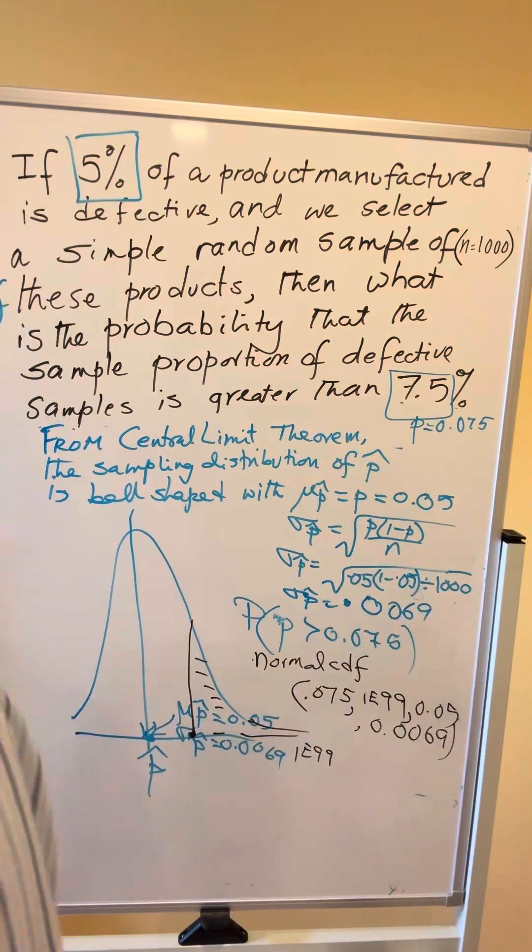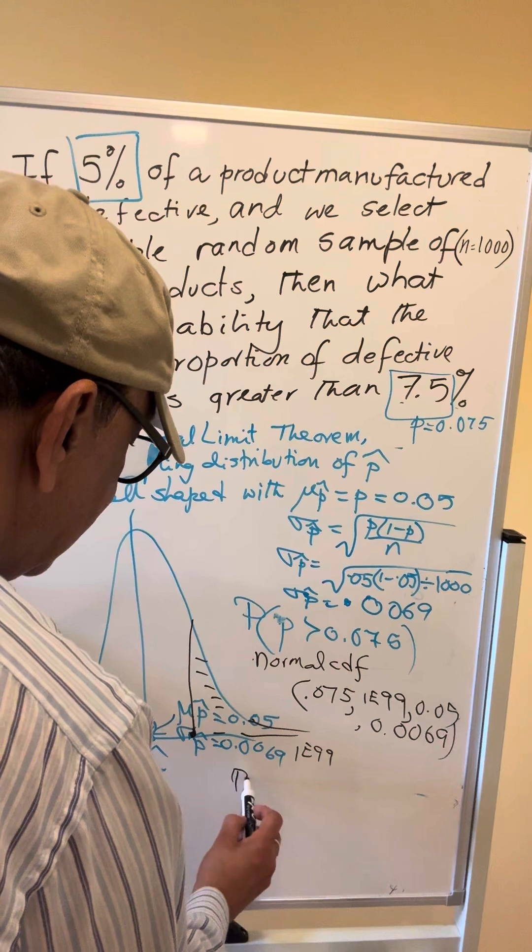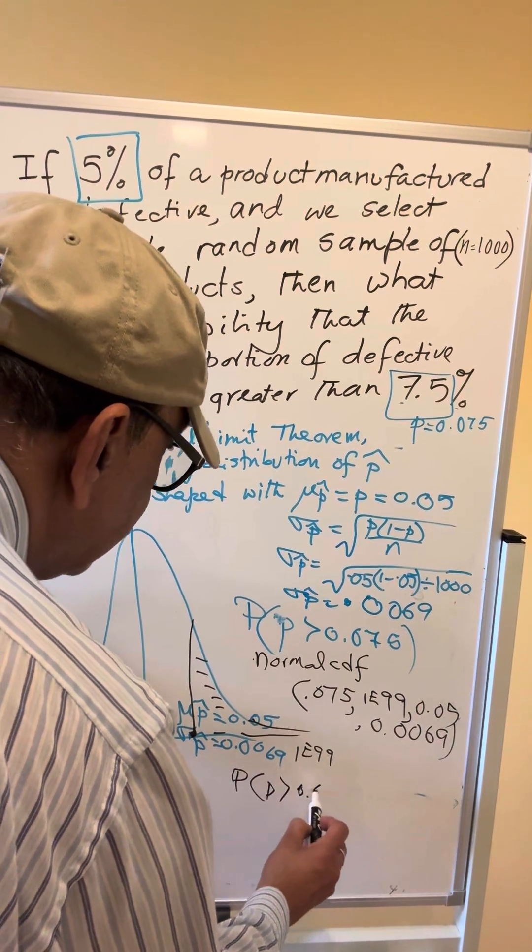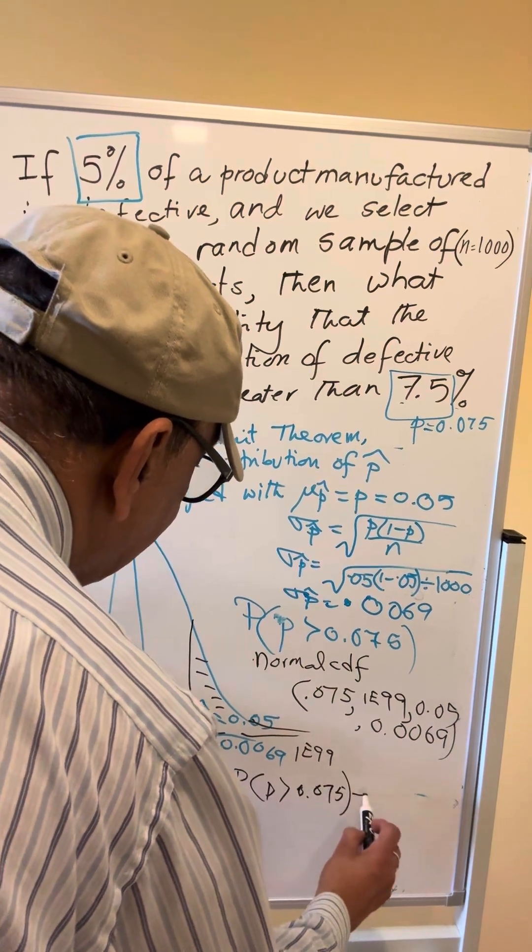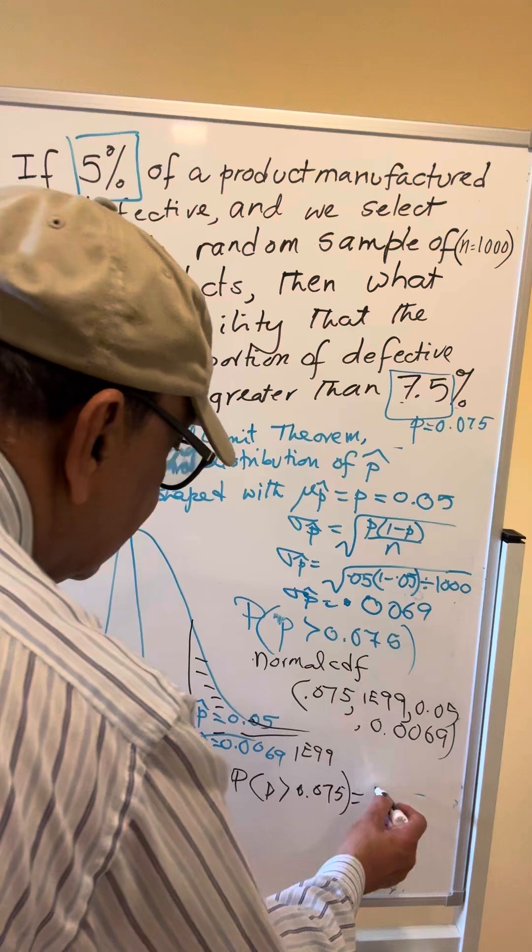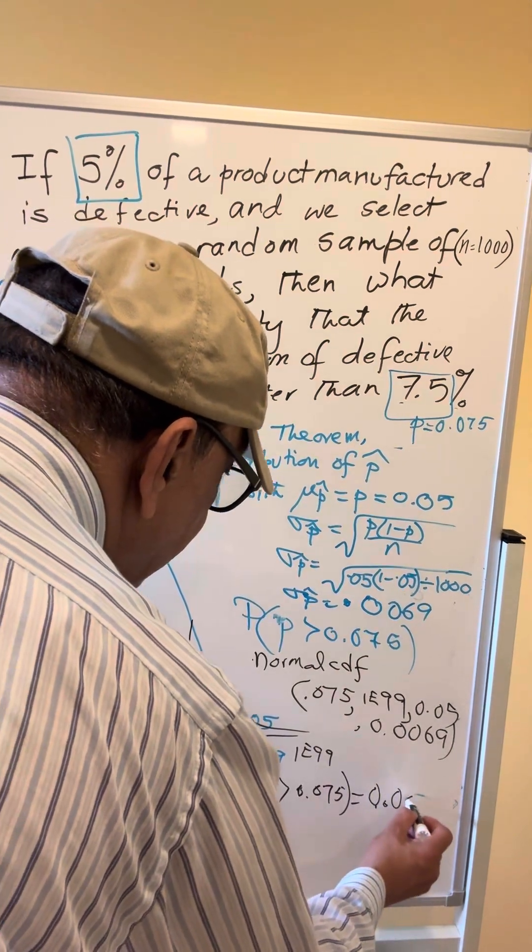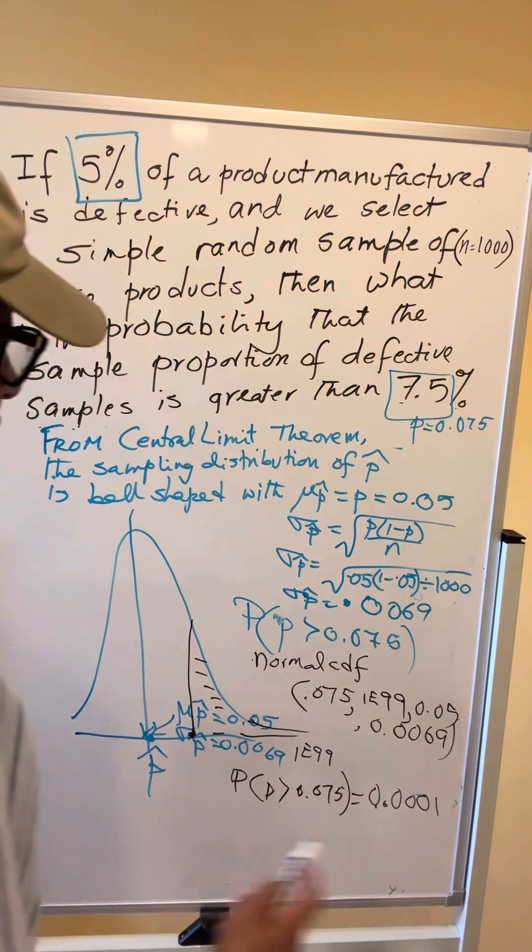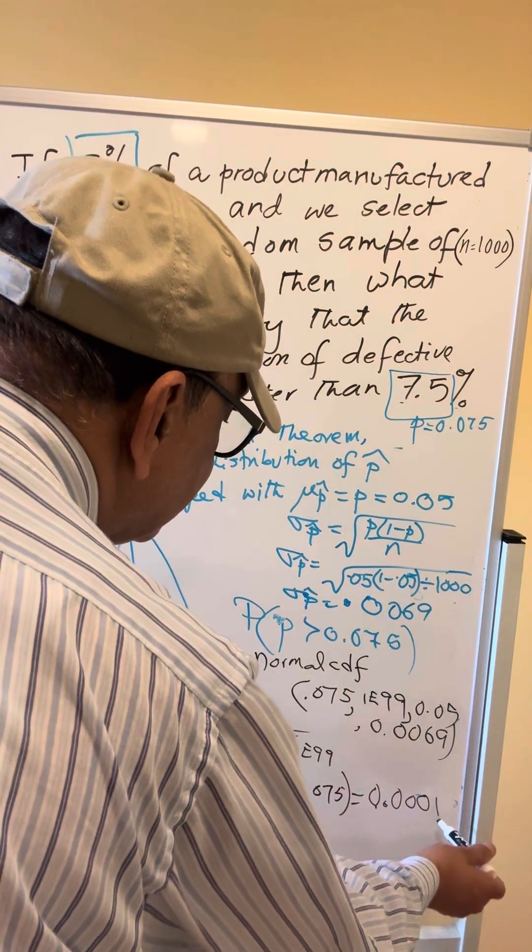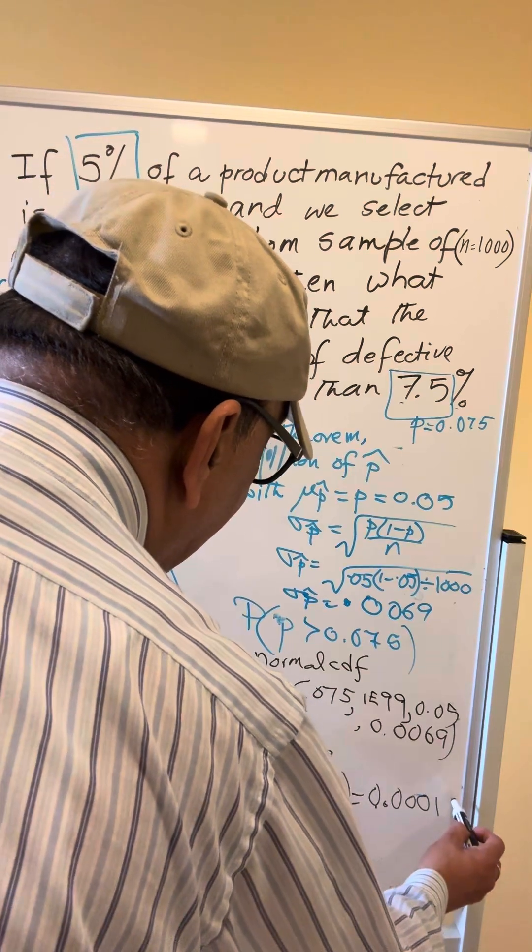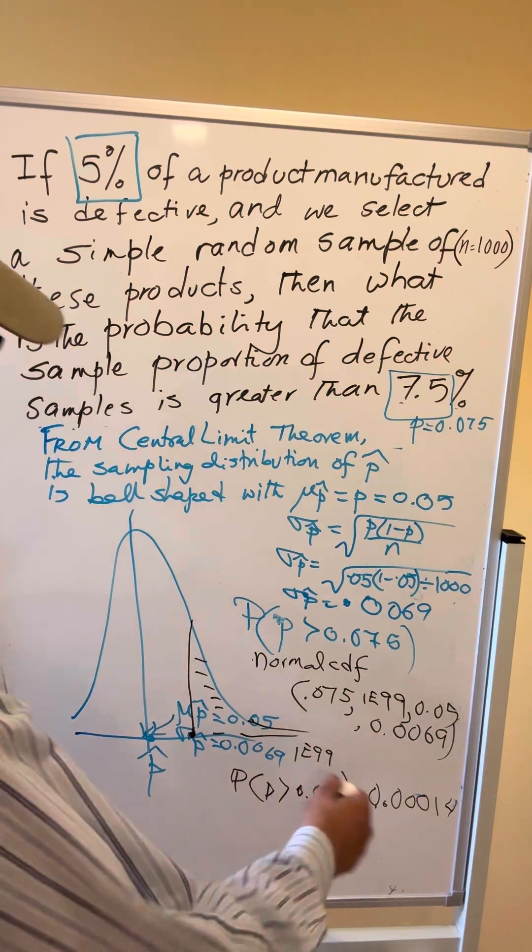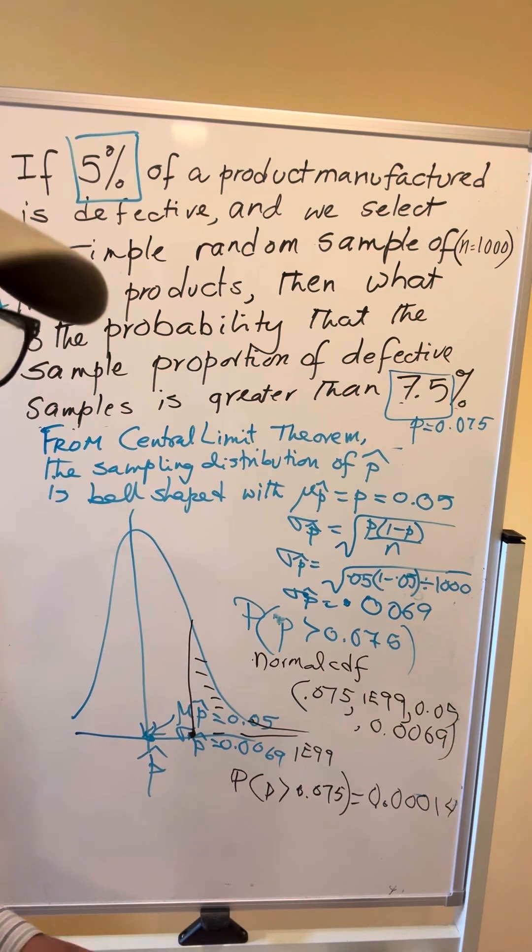And that is a very small probability. So that probability to the right of 0.075 is actually 1.45E-4. Three zeros, first number is at the fourth place after the decimal. So the probability of finding a population proportion greater than 0.075 is very small.